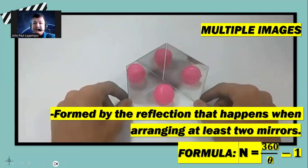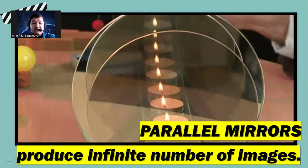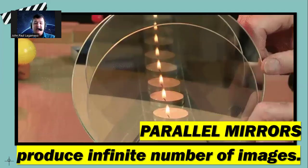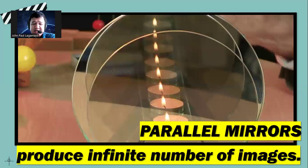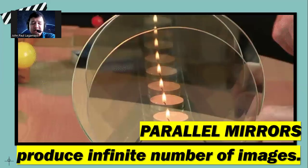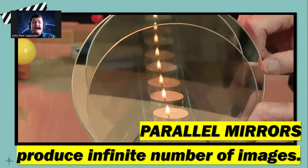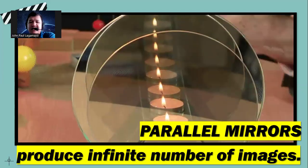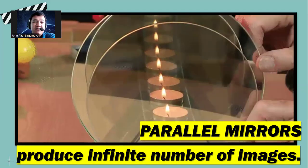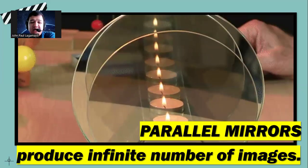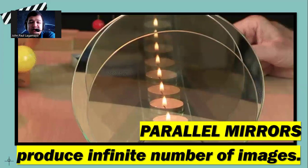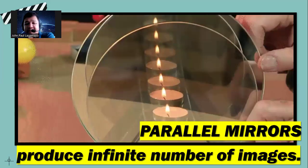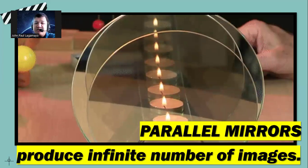Next we have the parallel mirrors. This can produce an infinite number of images when the object is placed at the center of the two mirrors. So that's what happened here—two mirrors, and then you can see an infinite number of images. This is also the concept in some museums when you visit. They are commonly used to produce an infinite number of images. When you are in the middle of the two mirrors, you can see yourself many, many times, depending on the capacity of the mirror to produce images up until infinite.